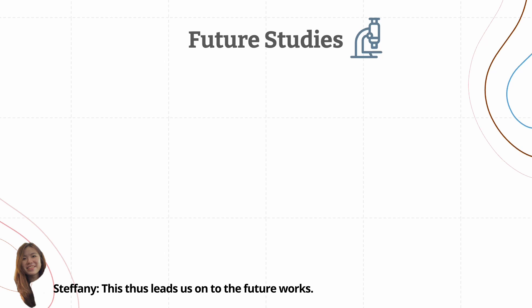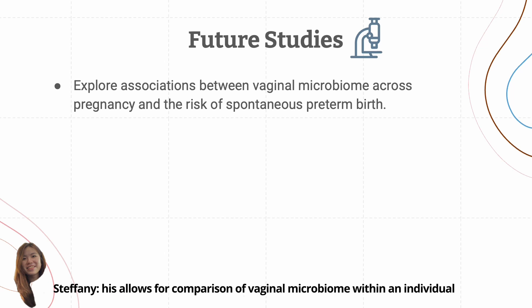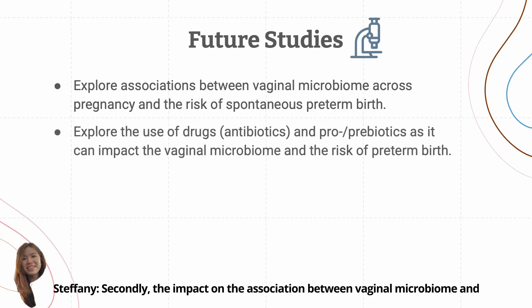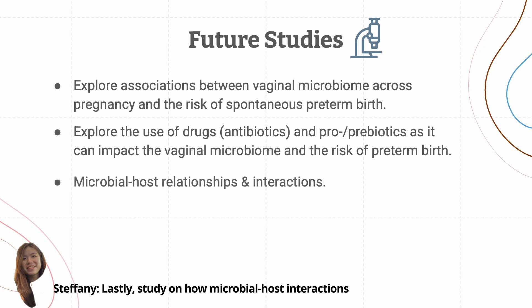This leads us to future works. The authors can consider exploring associations between vaginal microbiome across pregnancy and the risk of spontaneous preterm birth, which allows for comparison within an individual, reducing inter-individual variability and accounting for host immunity. Secondly, the impact on the association between vaginal microbiome and preterm birth by the usage of probiotics and antibiotics should be explored and accounted for. Lastly, studies on how microbiome-host interactions have led to the observed associations can also be conducted.